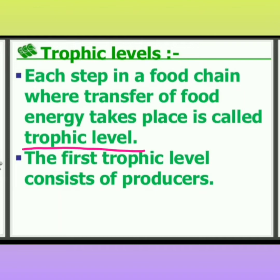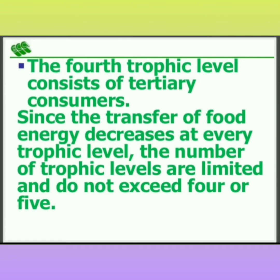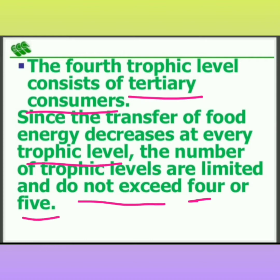The first trophic level consists of producers. The second trophic level consists of primary consumers. The third trophic level consists of secondary consumers. The fourth trophic level consists of tertiary consumers. Since the transfer of food energy decreases at each and every trophic level, the number of trophic levels is limited — they do not exceed four to five steps.